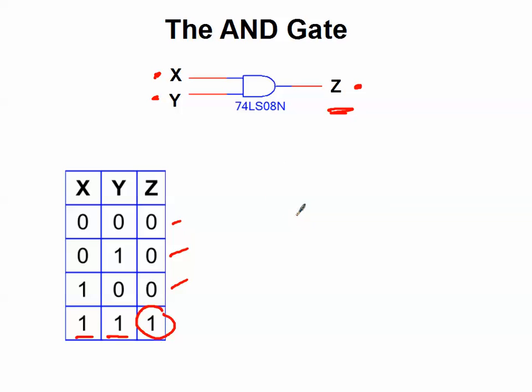So if we wrote the logic expression for this, basically the logic expression, I should say, we would say Z equals X times Y. Or you could write Z equals XY. That's the most compact way, and that's the way we'll be writing it. So AND is represented by XY, X times Y essentially.